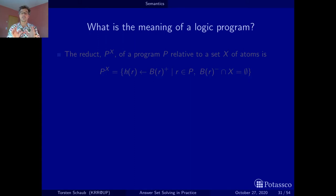Now this is nicely captured by, as the reduct-based semantics suggest, by the concept of a reduct. And here it is. Given a set of atoms X and a normal logic program P, the reduct is simply defined by the positive rules that more or less survive the evaluation of the negative body literals with respect to the set X.